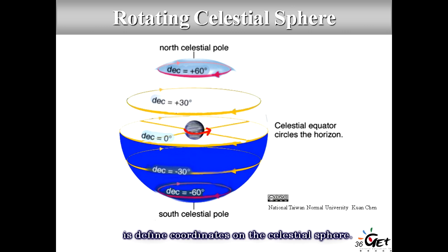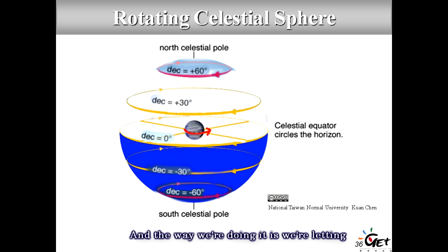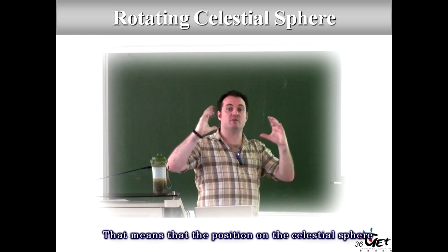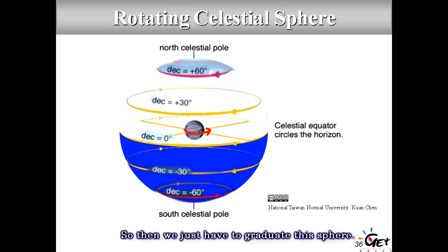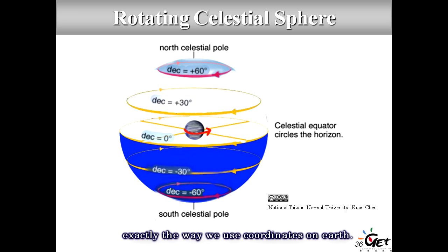We define the celestial sphere as the projection of all stars at any distance — like I mentioned for Orion, the stars are at different distances but appear to lie on the celestial sphere. In ancient times people thought the sky was a limited sphere with all the stars on it. We now know stars are at different distances, but the notion of the celestial sphere remains useful. On this sphere we can draw constellations and spot objects we're interested in. We can also define coordinates on the celestial sphere, graduated from 0 to 360 degrees along the celestial equator.